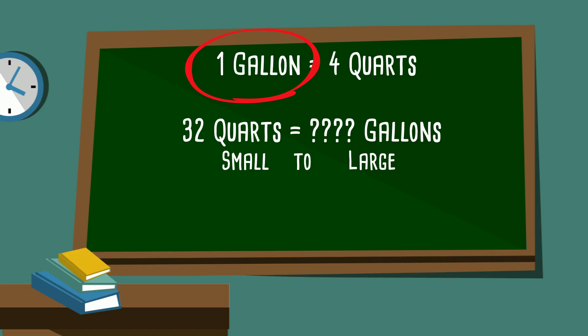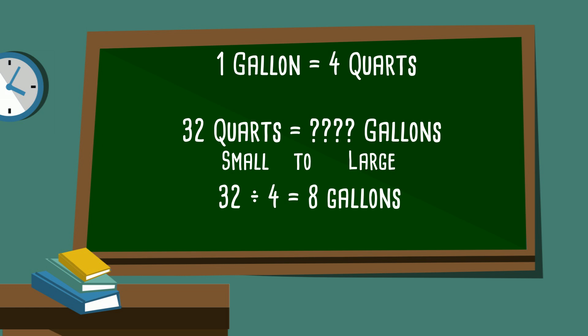So we're going to divide 32 quarts by four, because there are four quarts in one gallon. And when you divide 32 by four, that gives you eight gallons.